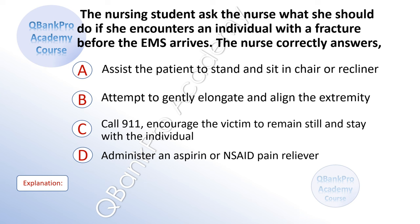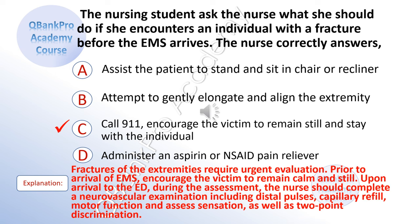The nursing student asks the nurse what she should do if she encounters an individual with a fracture before EMS arrives. The nurse correctly answers. A. Assist the patient to stand and sit in a chair or recliner. B. Attempt to gently elongate and align the extremity. C. Call 9-1-1, encourage the victim to remain still, and stay with the individual. D. Administer an aspirin or OTC pain reliever. The correct answer is C. Prior to arrival of EMS, encourage the victim to remain calm and still. Upon arrival to the emergency department, the nurse should complete a neurovascular examination including distal pulses, capillary refill, motor function, and two-point discrimination.